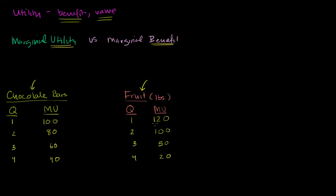The first pound of fruit I'm pretty excited about — I have a fruit craving. I like that first pound of fruit even more than that first chocolate bar — twenty percent more — so I get a hundred and twenty utility points. Then my next pound of fruit, once again, I'm having diminishing utility, diminishing benefit as I get more and more incremental pounds. It's important to realize this is marginal utility, not total utility — it's positive, so I'm still enjoying that next incremental pound, just a little less than the pound before.